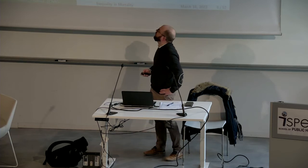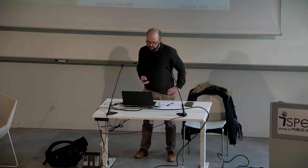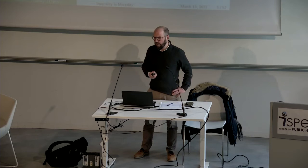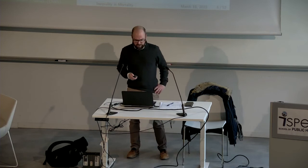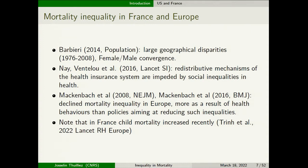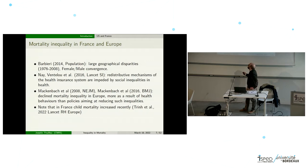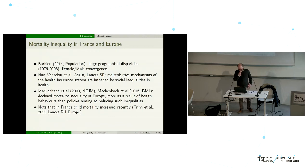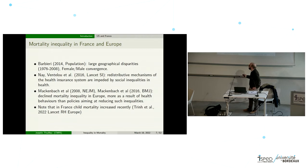There are many other papers from Cutler and others in this literature, and there is currently a huge interest in this topic in the US — there was a conference at NBER just two weeks ago on this specific topic. In France we also have a few studies. Barbieri, who manages the Human Mortality Database at Berkeley, finds large geographical disparities in France but with male and female convergence. There is also a paper in The Lancet from Naves, Clouet, and others showing redistributive mechanisms in France that may be impeded by social inequalities in health.